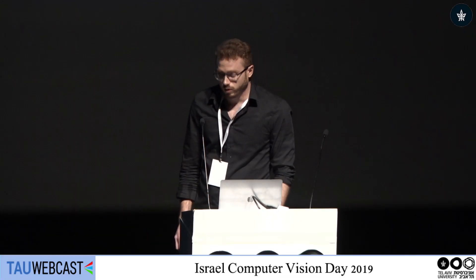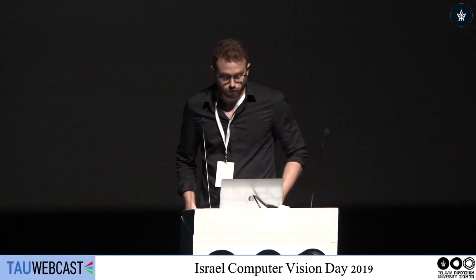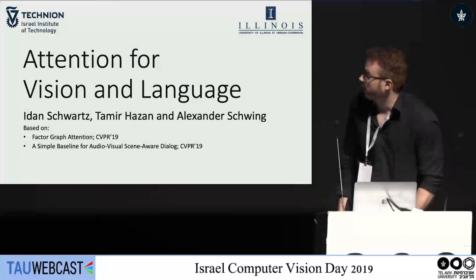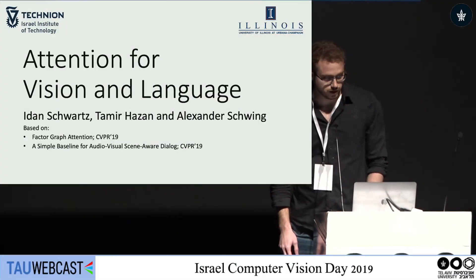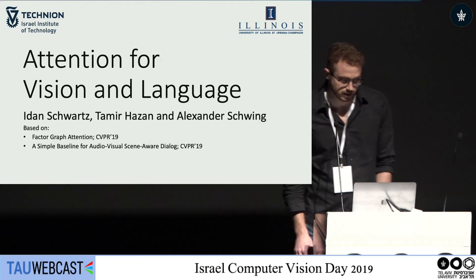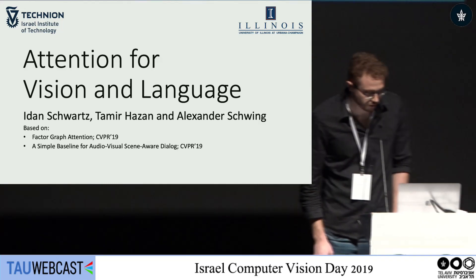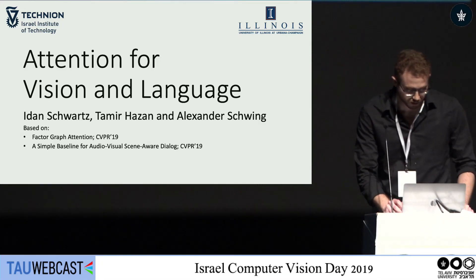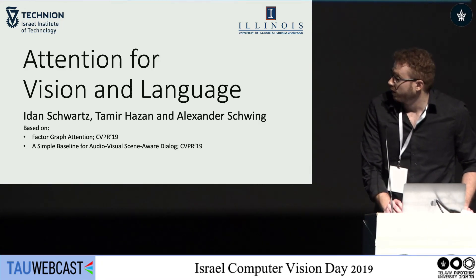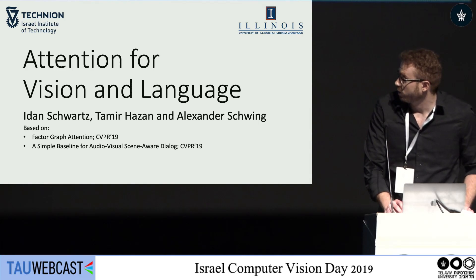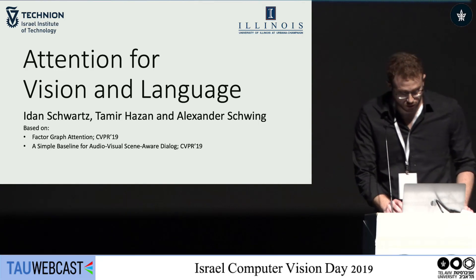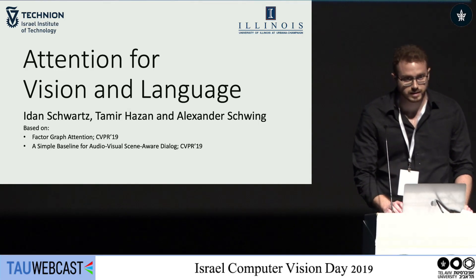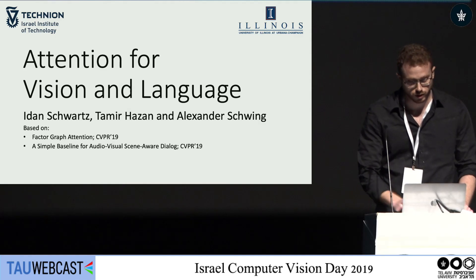In this talk, I'm going to present our work on attention for vision and language. The work was done with Tamir Hazan from the Technion and Alexander Schwing from UIUC, and the work is based on two papers we published in CVPR: Factor Graph Attention, and A Simple Baseline for Audio-Visual Scene-Aware Dialogue.